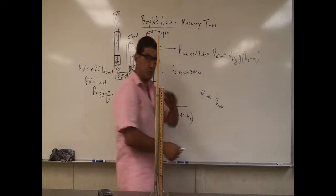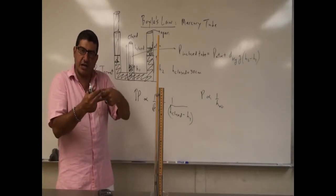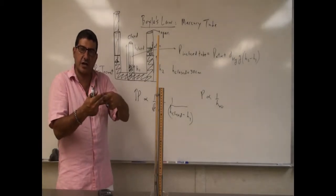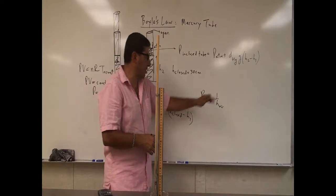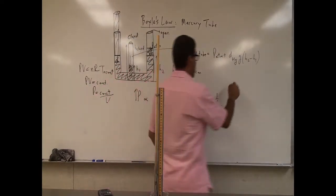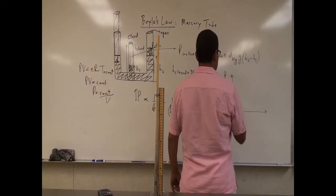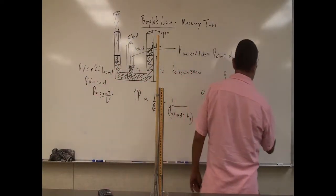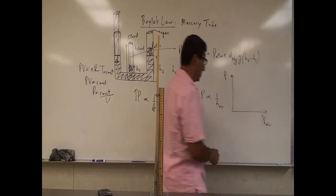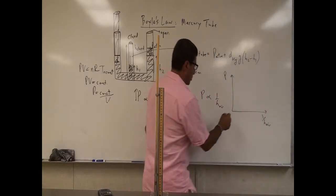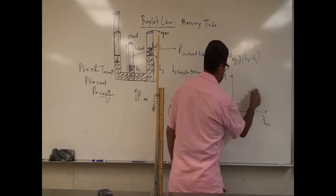I will invert this and show that pressure is proportional to 1 over H air, and I should be getting a straight line. In other words, if I invert the height of the air, I'll tabulate that. On the vertical axis, I'm going to graph pressure. On the horizontal axis, I'm going to graph 1 over H air. And then I should be getting data points that look like a straight line.